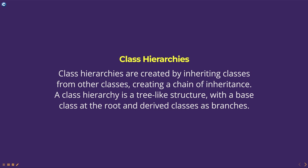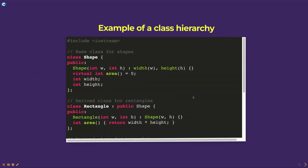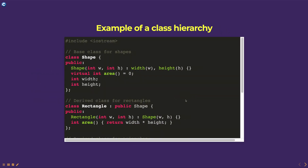By defining common features in a base class and then inheriting from that base class in derived classes, you can reduce duplication of code and make your code easier to maintain. Here is an example of a class hierarchy in C++.